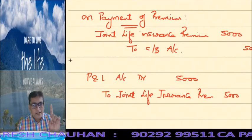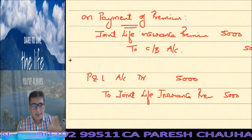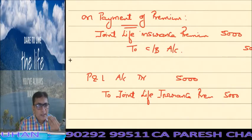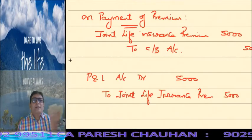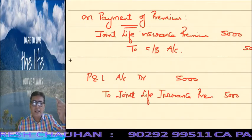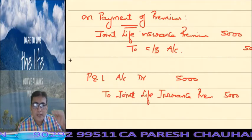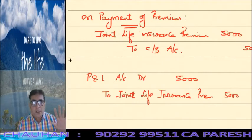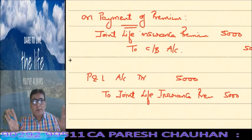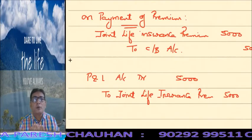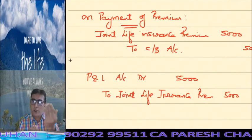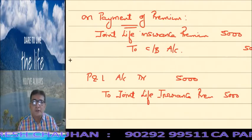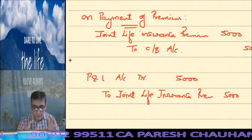We repeat the same entry each year — first year, second year, third year, and so on. Suppose the policy duration is 20 years. At the end of 20 years, which we call the maturity period, there is no more premium to be paid. Instead, we receive from the insurance company the maturity amount plus any bonuses declared throughout the 20-year period.